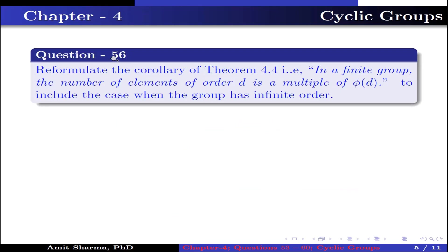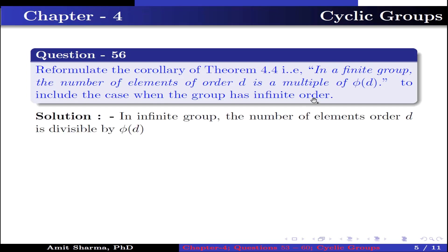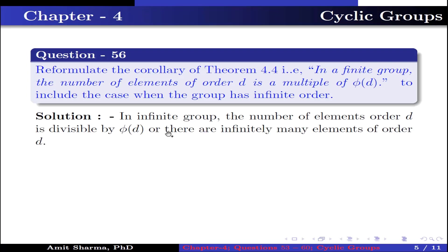Question number 56. Reformulate the corollary of theorem 4.4 — that in a finite group, the number of elements of order D is a multiple of φ(D) — to include the case when the group has infinite order. In an infinite group, the number of elements of order D is divisible by φ(D), or there are infinitely many elements of order D.